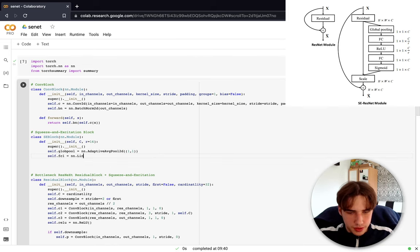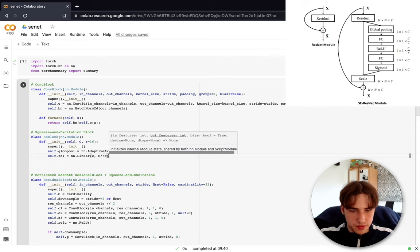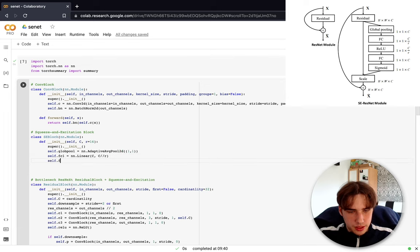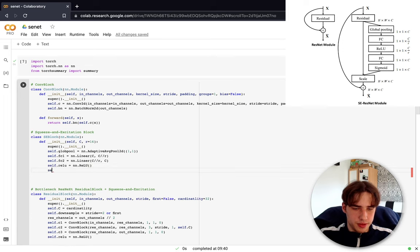Another one is fully connected layer, the first one. Linear: in_features is basically channels and the output is channels divided by r. Then we got a second fully connected layer where the input is channels divided by r and the output is channels. The other thing is just ReLU and sigmoid.